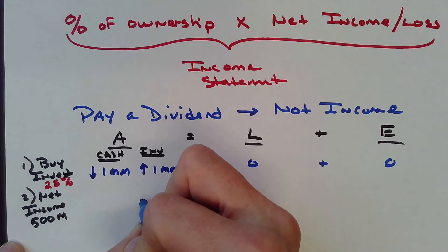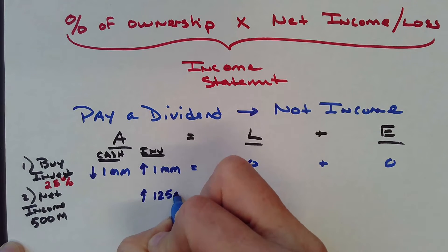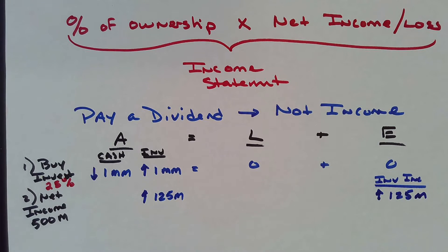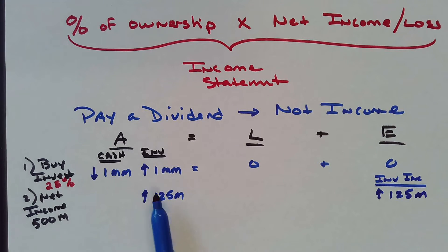So my investment is going to go up $125,000, and my equity, my investment income, is going to go up $125,000. I recognize my share of the half million dollar net income for the whole company.